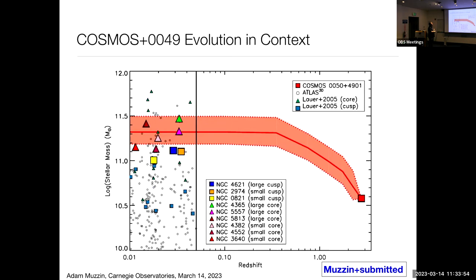Before I show you what the light profile looks like, I want to poll the audience. So here's the lens galaxy at redshift 2.75 with a stellar mass of log 10.6. Using the Barozzi tool to trace its descendant, and here are a bunch of local galaxies for which we have the inner light profiles measured — cores are diamonds and cusps or extra-light galaxies are squares. The descendant of this galaxy sits in the transition regime between cores and cusps. So what do you think it's going to be when I show you the answer: a core or a cusp?